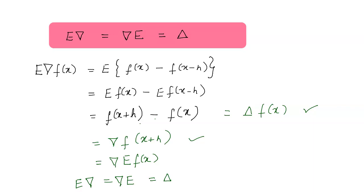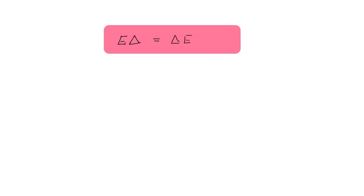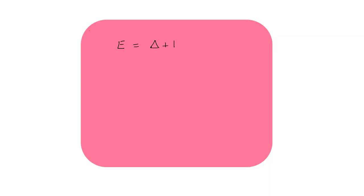If you go step by step, it is a very simple and easy process. In the same way, we can prove our next property: E delta equals delta E. You just have to write the expressions, start from the left hand side, and you will arrive at the right hand side. To summarize: the first property is E = 1 + delta; the second is E inverse = 1 - nabla; the third is E nabla = nabla E = delta; and the fourth is E delta = delta E.